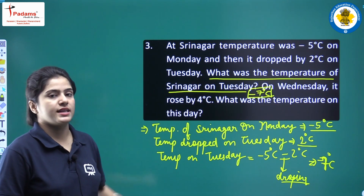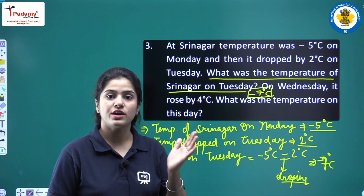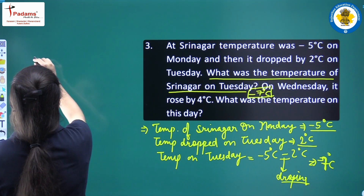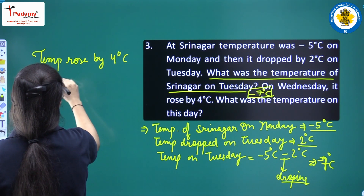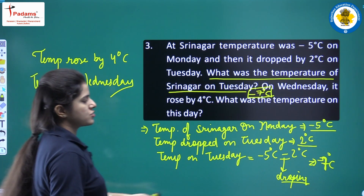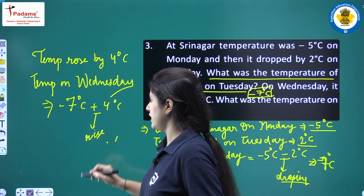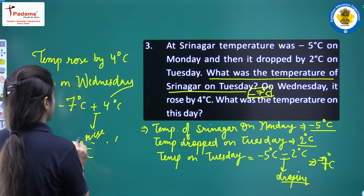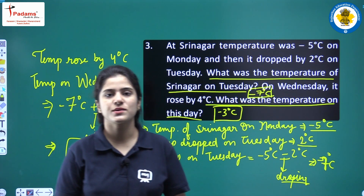Then on Wednesday, it rose by 4 degrees Celsius. Whatever the temperature on Tuesday was, it rose by 4 degrees Celsius. The temperature on Wednesday equals minus 7 degrees Celsius plus 4 degrees Celsius. It is plus because the temperature is rising. So minus 7 plus 4 equals minus 3 degrees Celsius. The temperature on Wednesday was minus 3 degrees Celsius. This was question number 3.